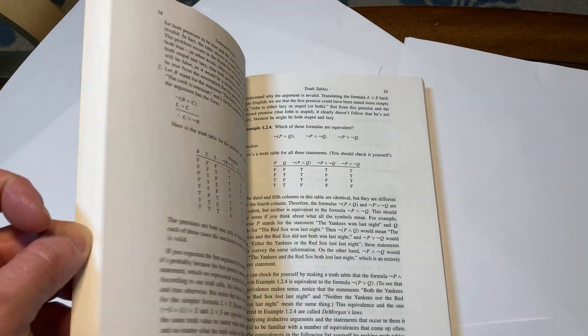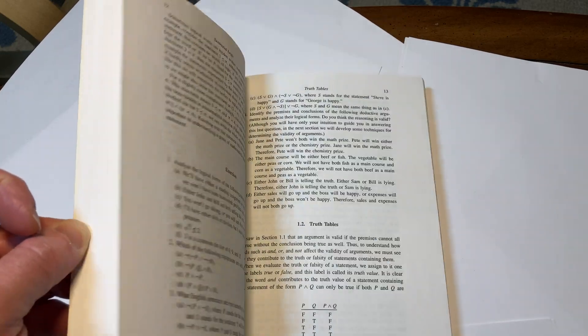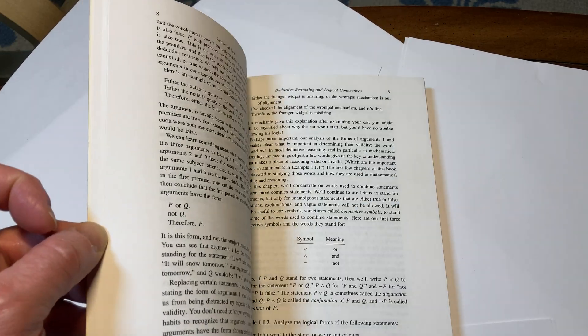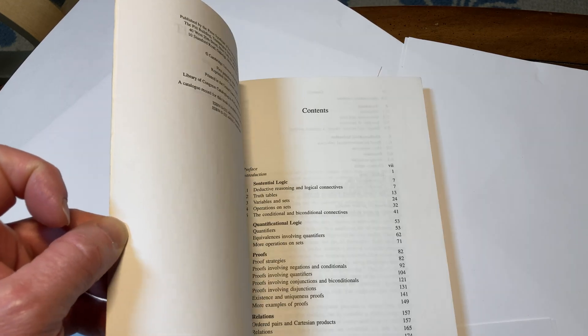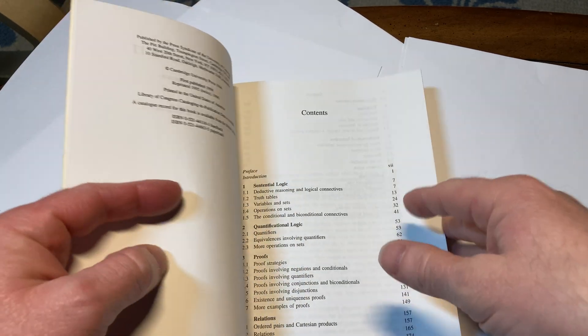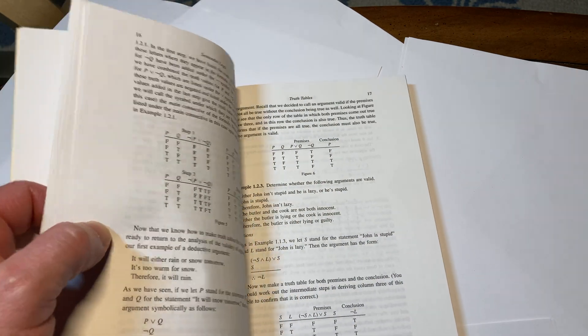Someone was leaving comments saying, oh, you should check out this book. And I looked it up and it was kind of expensive. It was like $30. And I was like, I don't want to spend that much money. I already have proof writing books. Do I really need another one?